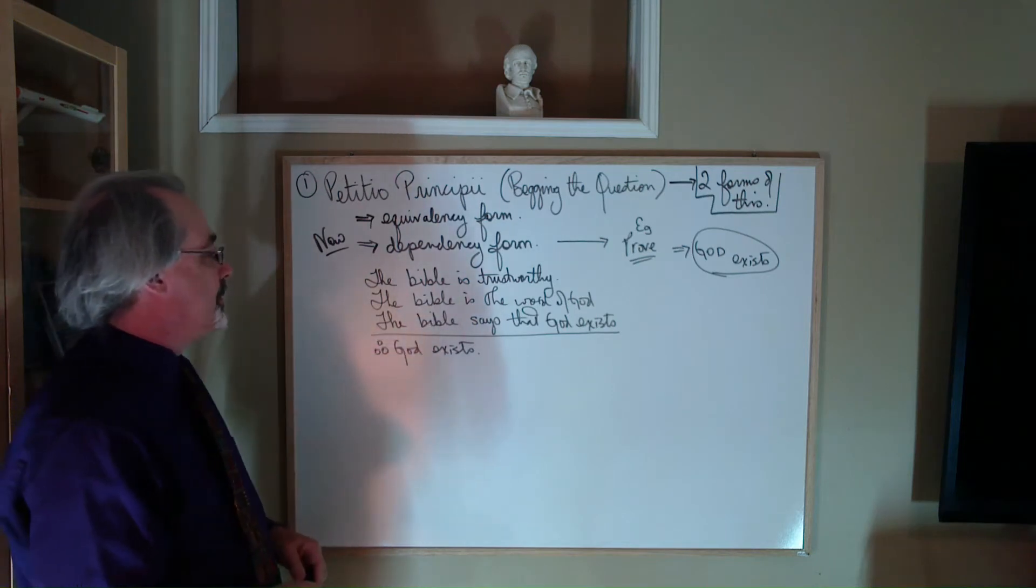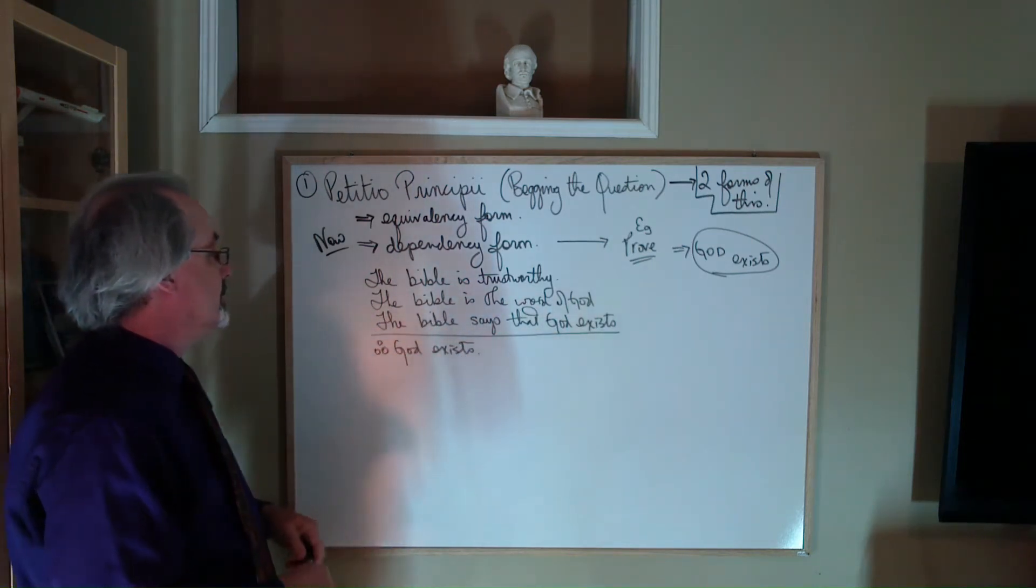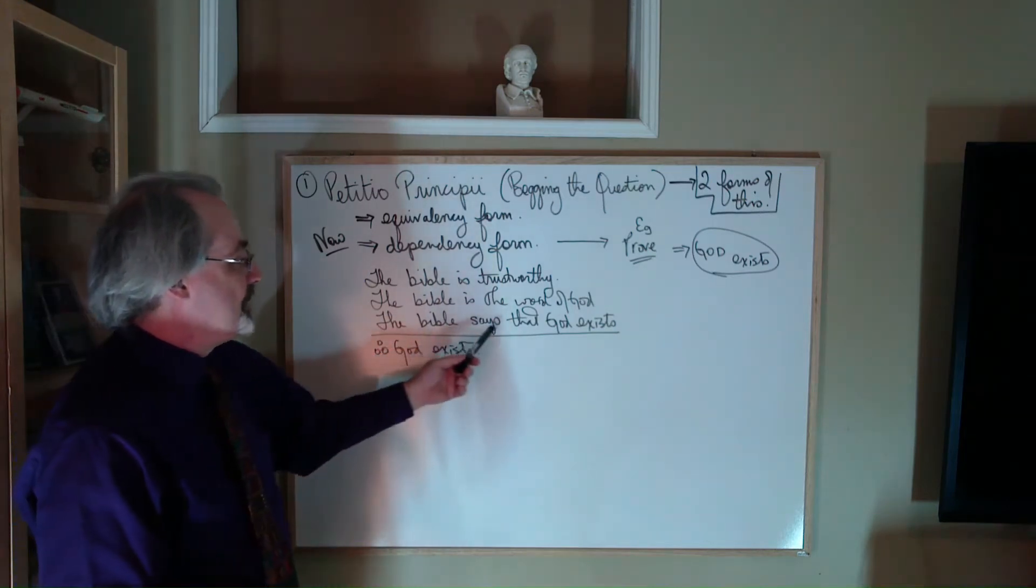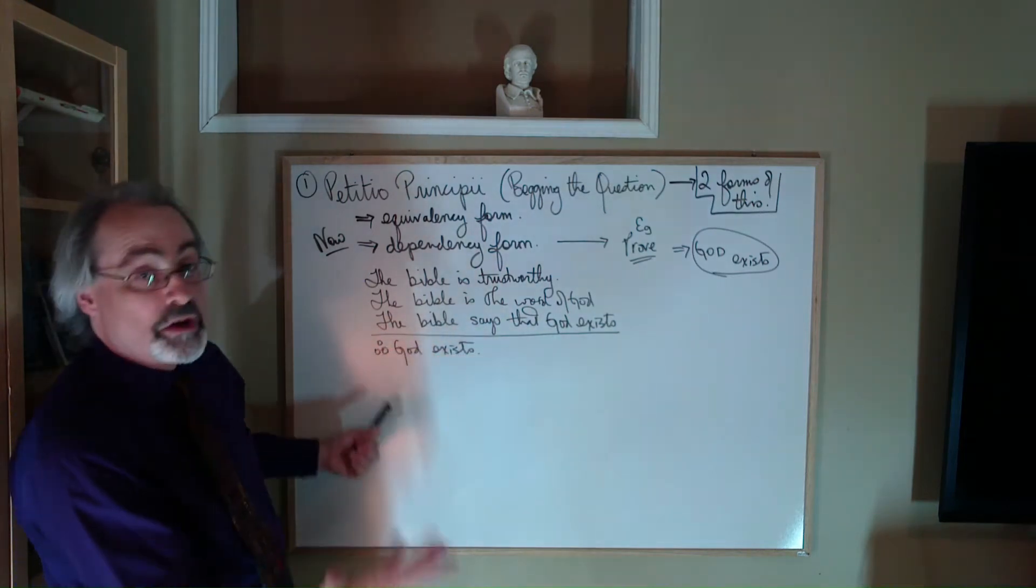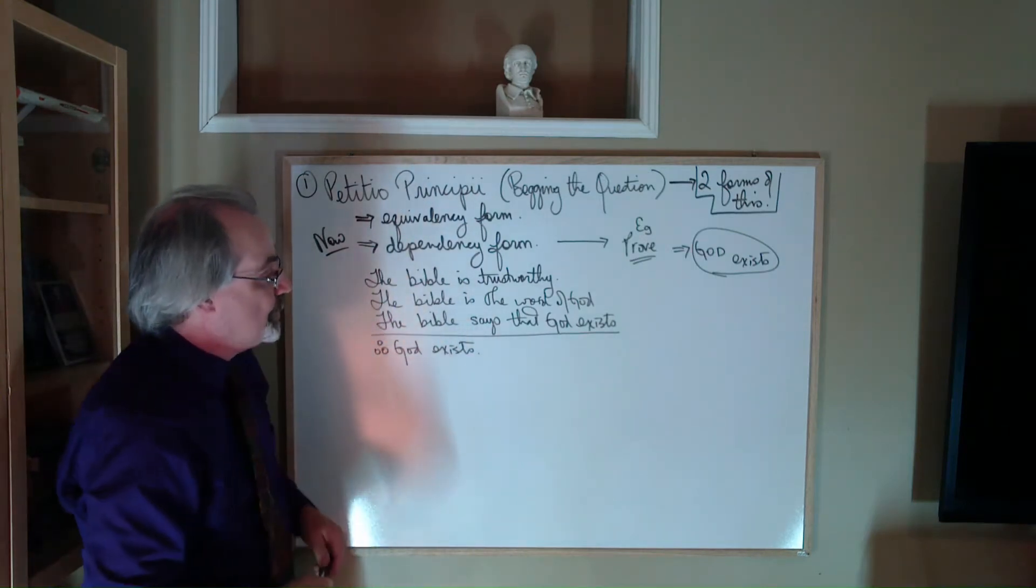Something like this: The Bible is trustworthy, the Bible is the word of God, and the Bible says that God exists. Hence, therefore, there's our inference from the premises down to the conclusion, God exists.